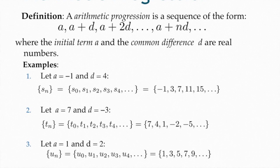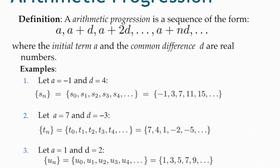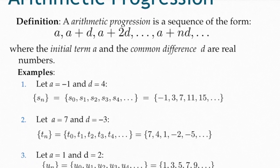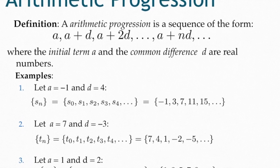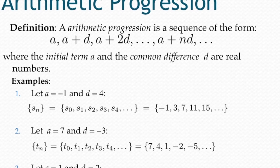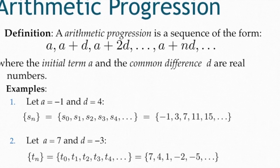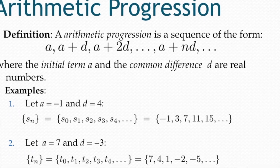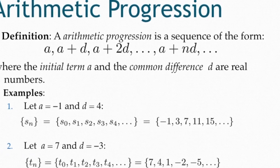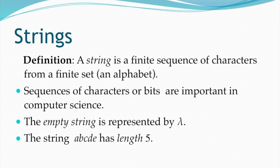For another arithmetic progression example with a=7 and d=-3: t0 = 7, t1 = 7+(-3) = 4, and so on. Strings that we use in computer science are a finite sequence of characters and are basically a form of sequences.